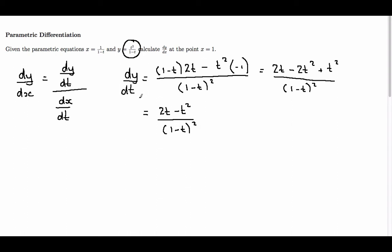So that gives me dy/dt. I also need to find dx/dt, and to do so I'm going to rewrite 1 over (1 minus t) as (1 minus t) to the minus 1.